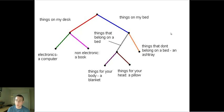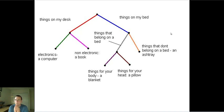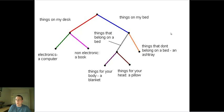For example, to find things in my room, follow these rules. Things are either on my bed or on my desk — things on the bed go right, things on the desk go left. Among the things on the bed, some belong on the bed and some don't. If you go to things that don't belong on the bed, you find an ashtray. Among things that do belong on the bed, some are for your body and some are for your head — a blanket for the body and a pillow for the head. Depending on what you answer at each branching point, you go one way or the other and reach the final classification.